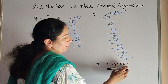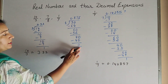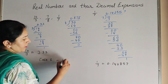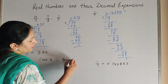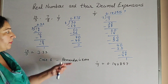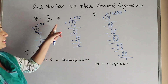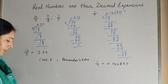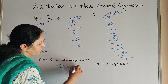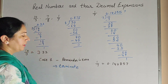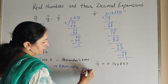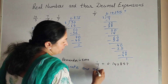There are two cases. Case one: when the remainder is equal to zero. For example, 7 divided by 8 gives remainder zero. In this case the decimal expansion is terminating — it ends after a finite number of steps. It is terminating and not repeating.